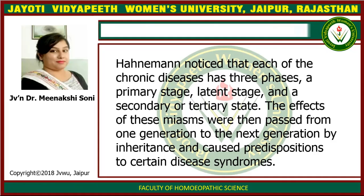Hahnemann identified three stages. In the primary stage, when it exists in your body, the initial symptoms are very minute. You can treat it or avoid it. However, it can go into a latent stage, where it does not give symptoms. When certain circumstances occur in the body, it moves into the secondary or tertiary stage, where secondary symptoms manifest. These miasmatic effects come in the form of symptoms — whatever stage: primary, latent, or secondary/tertiary — and are passed from generation to generation.